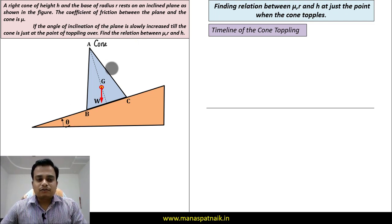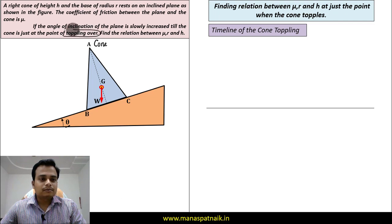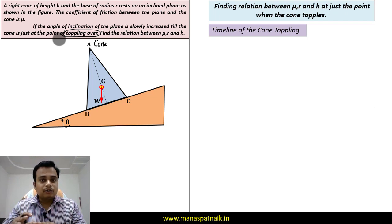The angle of inclination of this plane over here is slowly increased till the cone is just at the point of toppling over. It is not going to topple, but it's a limiting case. We need to know how long the cone can sustain without toppling, and it is for this condition, this state, we need to find the relationship between μ, r, and h.